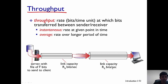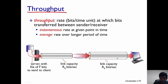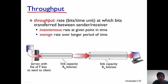Let's look at an example. Here there is a server which has a file of length F bits and wants to send it to a client. Between the server and client there are two links: the first link has a capacity of R_s bits per second and the second link has a capacity of R_c bits per second.